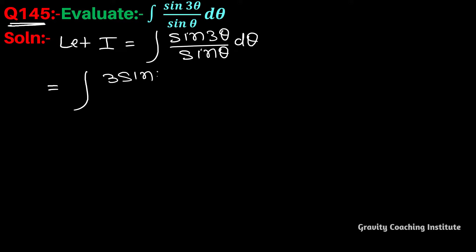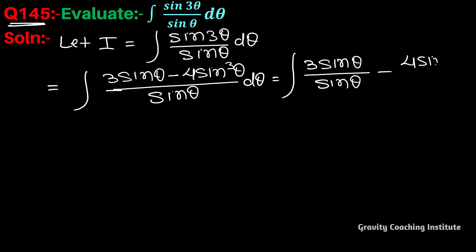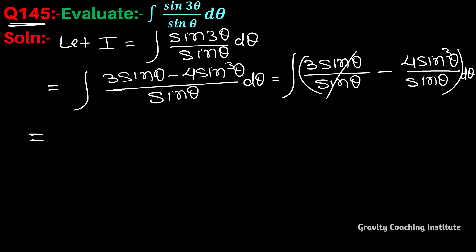We know that sin(3θ) equals 3sinθ minus 4sin³θ. Substituting, we get (3sinθ minus 4sin³θ) upon sinθ. Now split the fraction: 3sinθ upon sinθ minus 4sin³θ upon sinθ dθ.